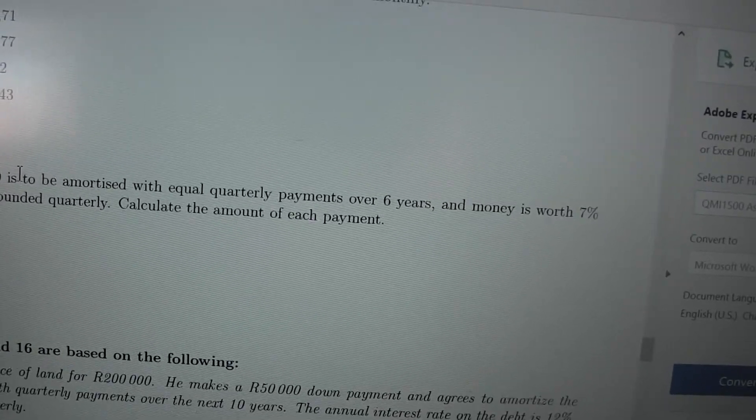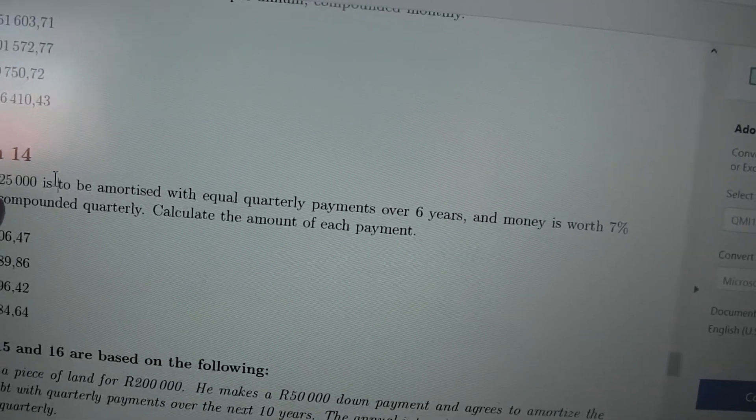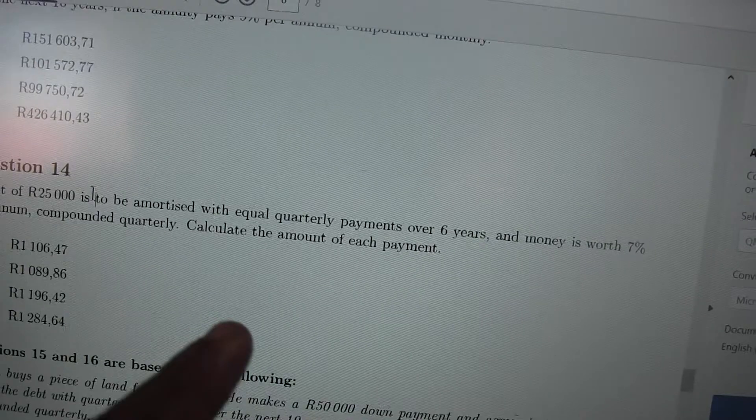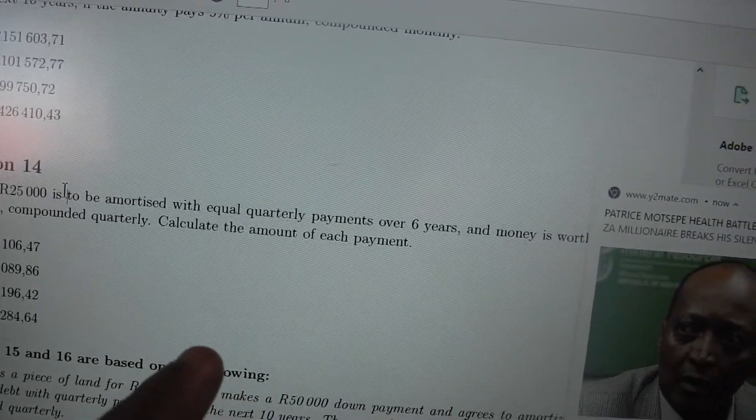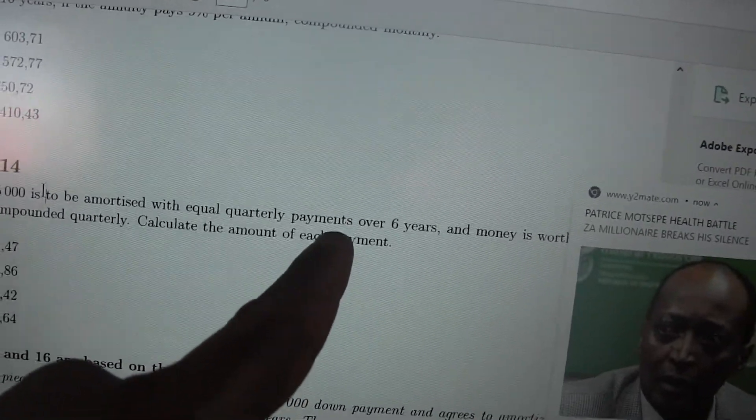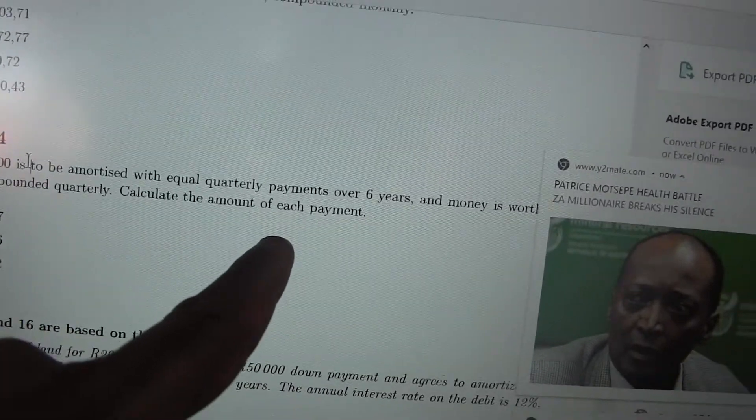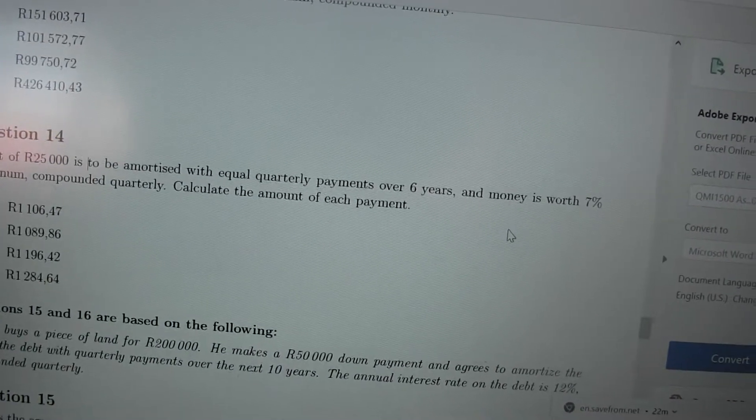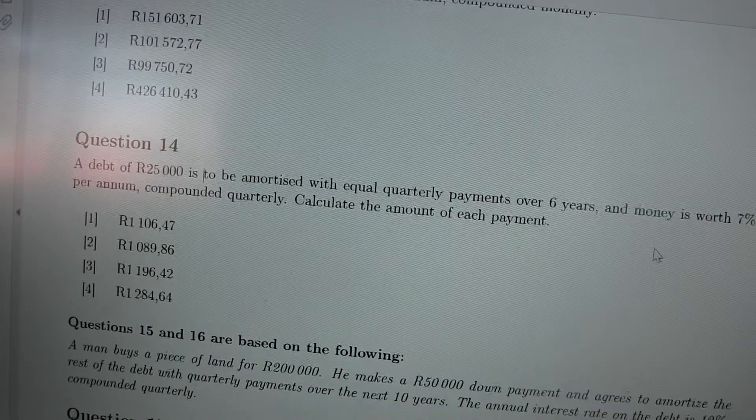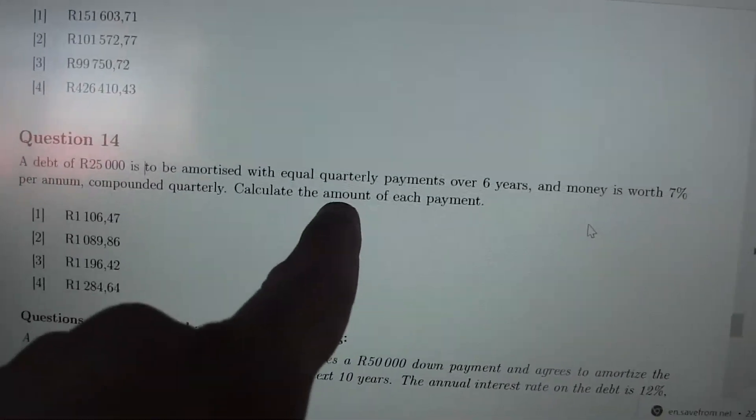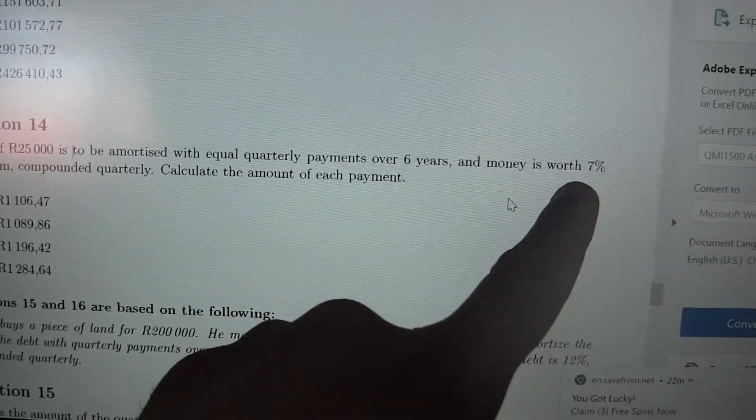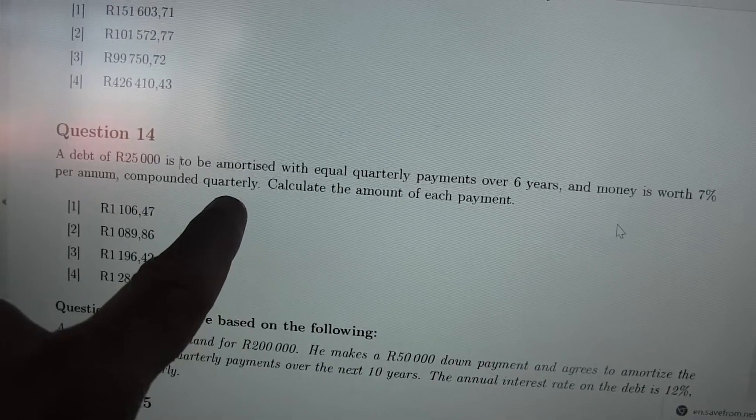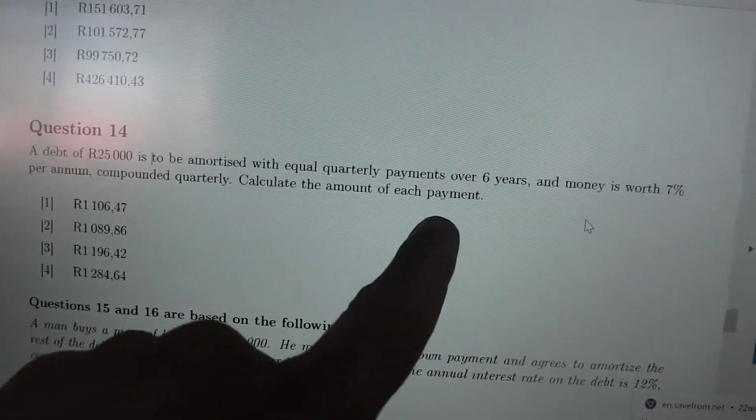It's going to be split out or reduced into various parts with quarterly payments over six years. This is going to be a present value. It means this is the money that now has to be amortized. So present money amortized with equal quarterly payments over six years, and the money is worth 7% interest rate per annum, compounded quarterly. So whenever the money is compounded quarterly, means you're going to use four. Calculate the amount of each payment.